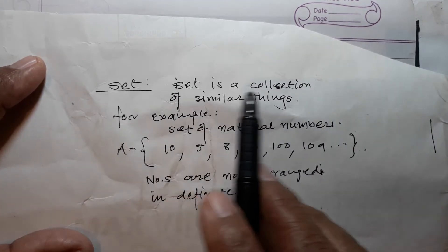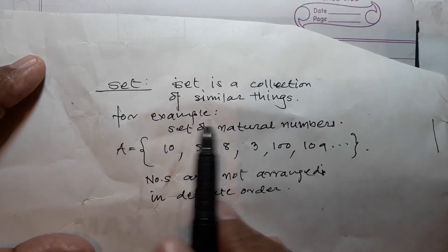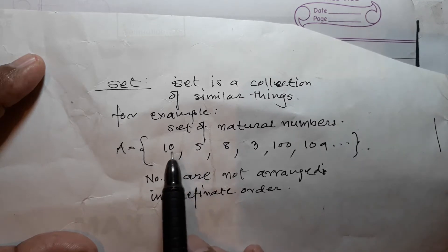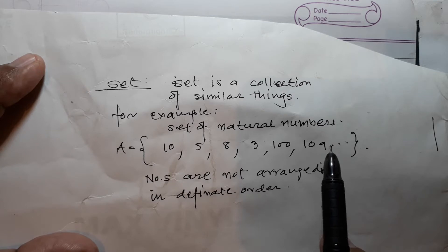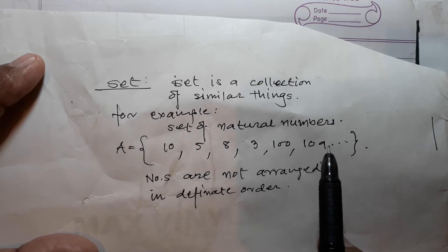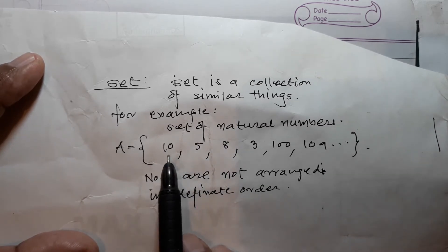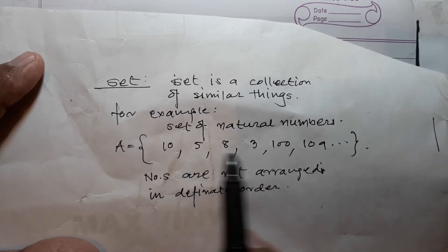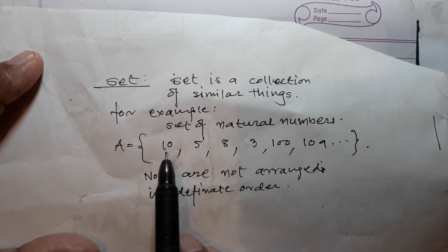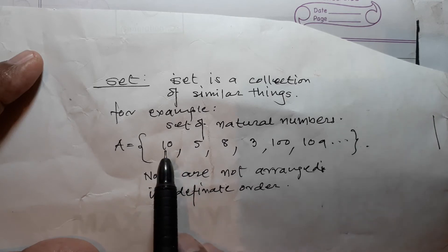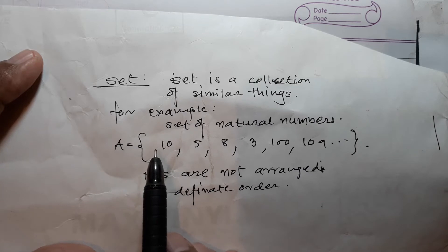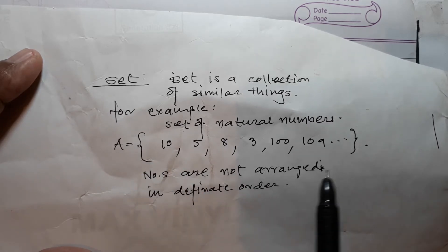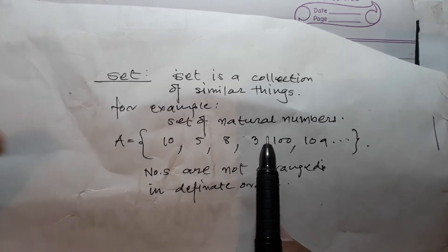Last year you have learned about set. A set is a collection of similar things. For example, the set of natural numbers: A = {10, 5, 8, 3, 100, 1, 0, 9, ...} and so on. Set is always denoted by A and these numbers are called elements of set A. These elements are randomly arranged — there is no definite relation or order between them.